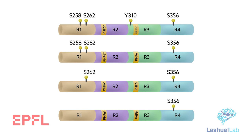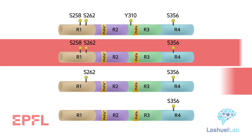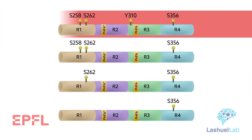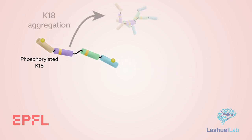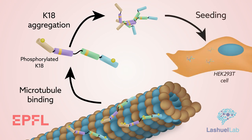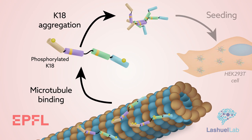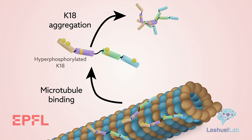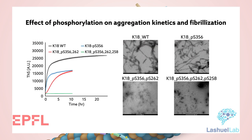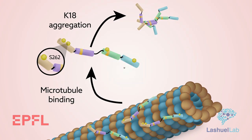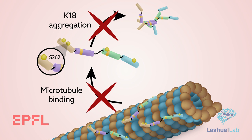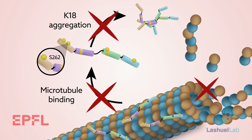They generated K18 with one, two, three, or four phosphorylation sites and assessed the effects of single or multiple phosphorylation on K18 aggregation, microtubule binding, and seeding activity. They found that phosphorylation at multiple sites, a state known as hyperphosphorylation, inhibits tau aggregation and binding to microtubules. Phosphorylation at serine-262 in particular appears to play a dominant role in disrupting tau's ability to aggregate, bind to microtubules, and promote microtubule polymerization.